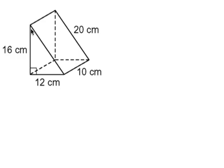To find the surface area, we need to find the area of every surface and add them together. So we're going to start with the base triangle and draw it out separately.